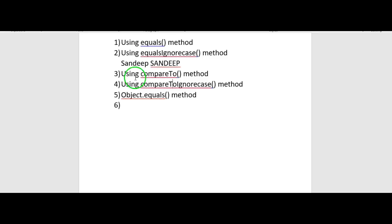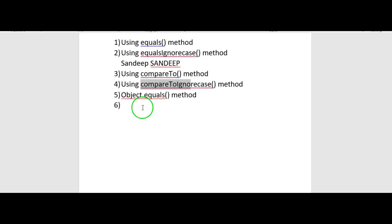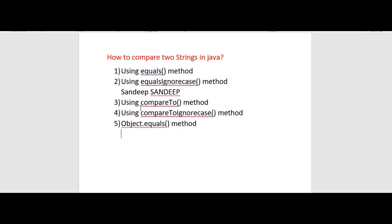The fourth method is compareToIgnoreCase. In this method, we ignore the case — whether it is capital, small, or camel case. And lastly, there is the Objects.equals method. These are the five different ways to compare two strings in Java.